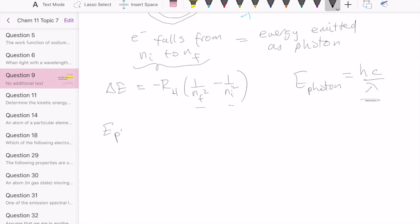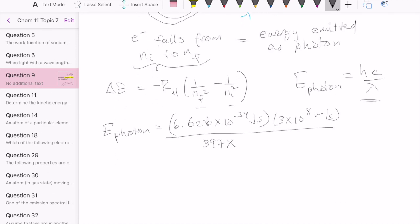The first thing we're going to do is just calculate the energy of the photon that's being emitted. We'll do Planck's constant times speed of light over the wavelength itself, which is 397 nanometers, which we can convert to meters using the appropriate exponent. That gives us 5.007 times 10 to the minus 19 joules.